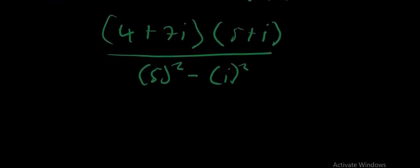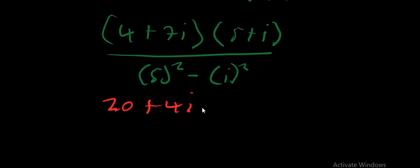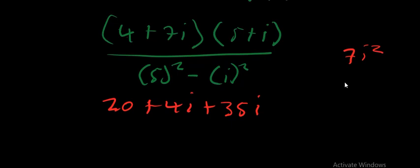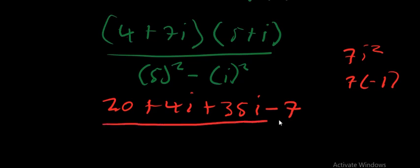Expanding the numerator: 4 × 5 = 20, then 4 × i = +4i, then 7i × 5 = +35i, and 7i × i = 7i². Since i² = −1, the term 7i² becomes −7. The denominator is 5² − i² = 25 − (−1).